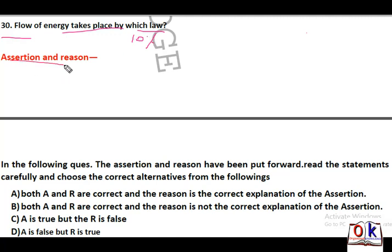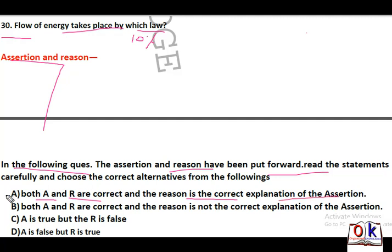Now next is assertion and reason questions. In the following questions, assertion and reason have been put forward. If both assertion and reason are correct, and reason is the correct explanation of assertion, answer will be A. If both are correct but reason is not the correct explanation, answer will be B.